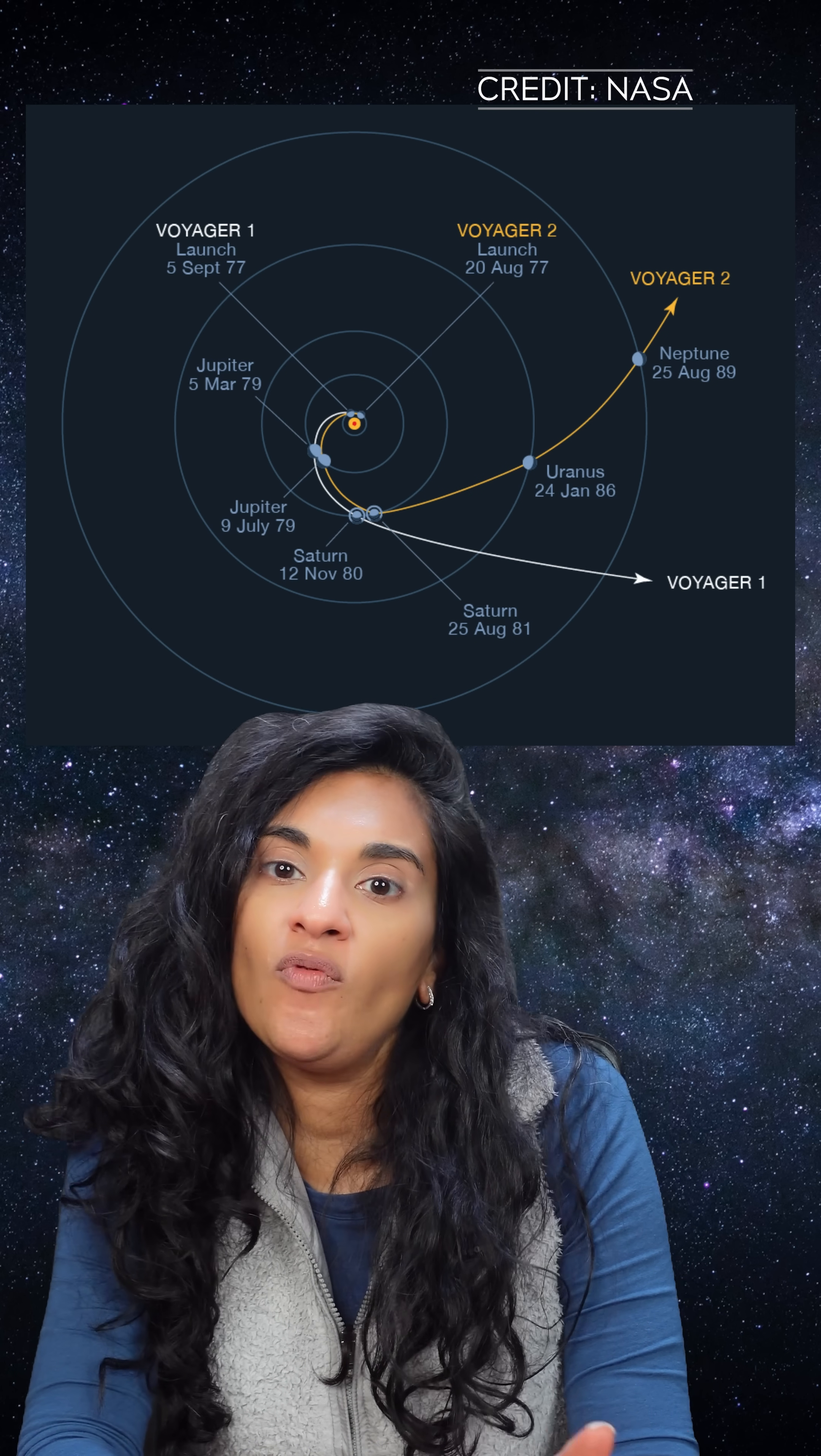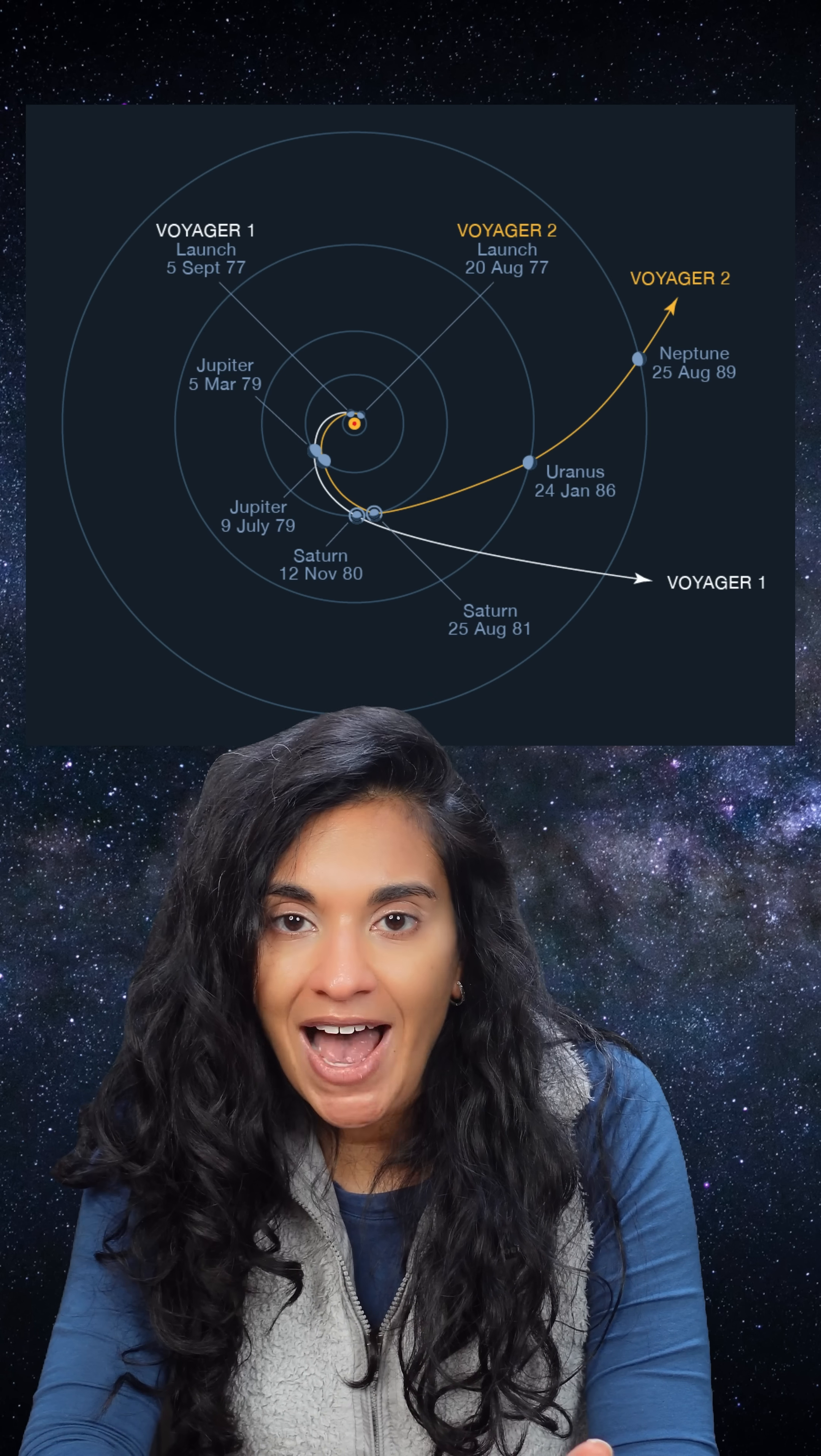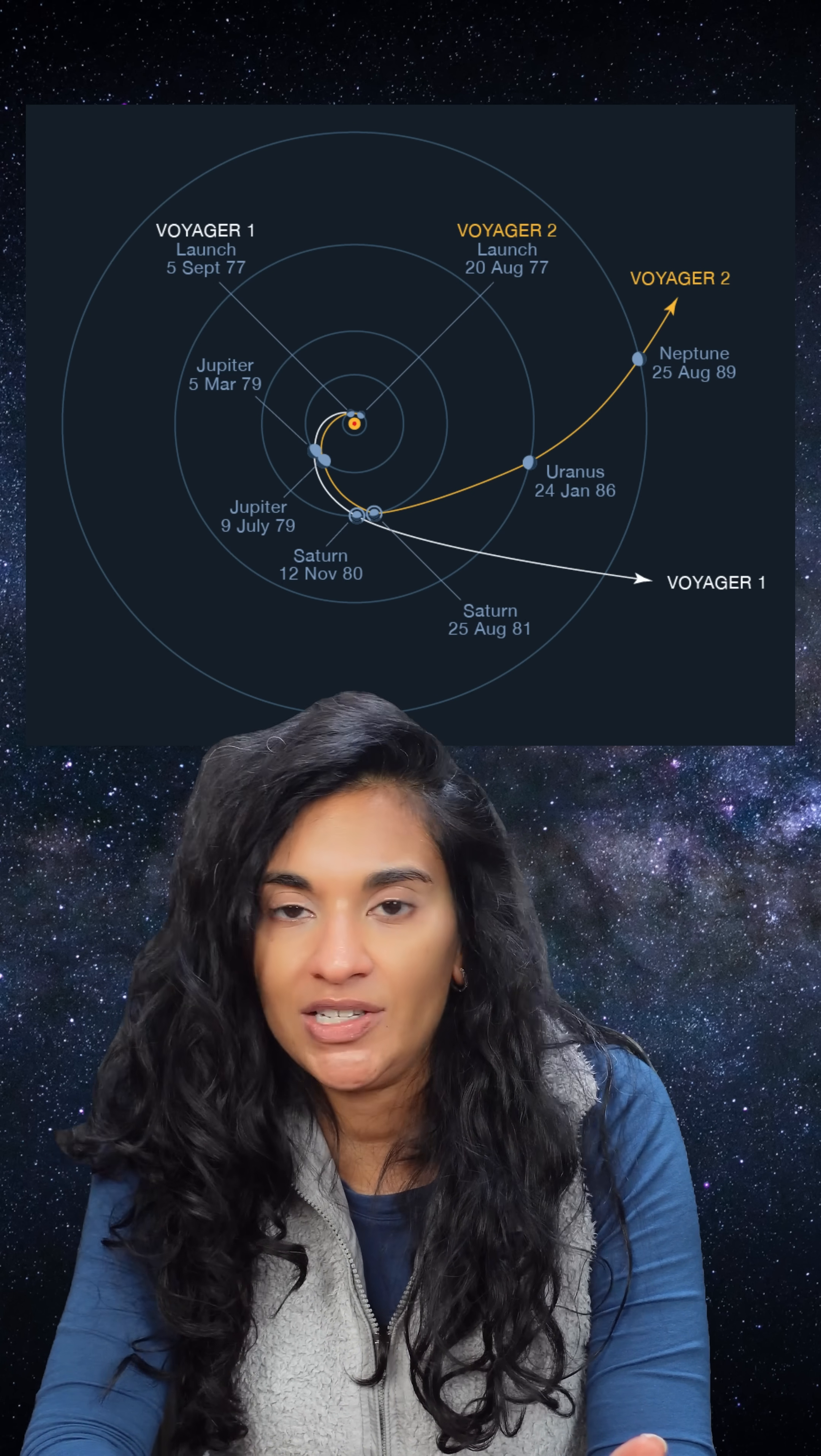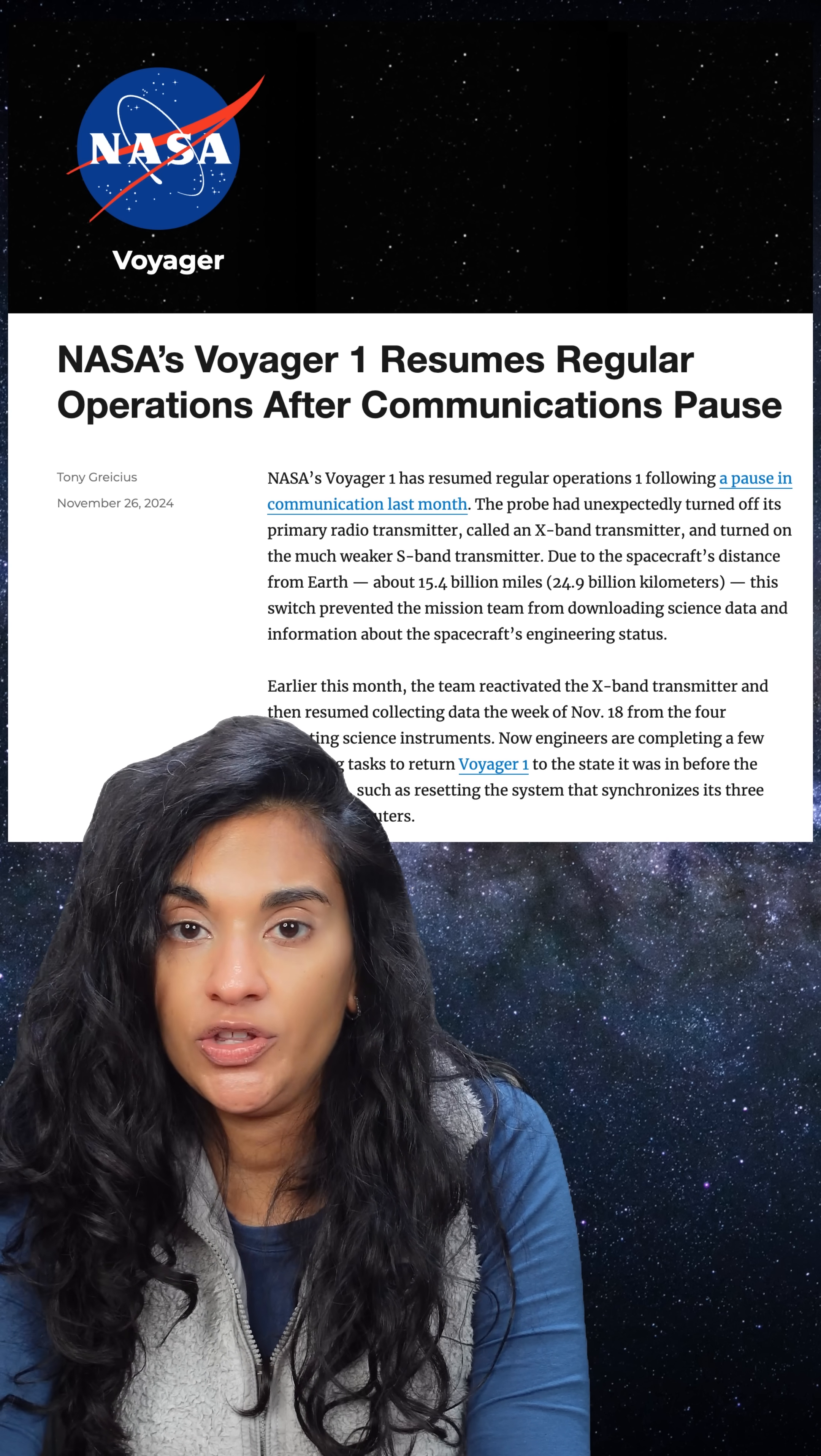The team does use a virtual computer model to simulate what Voyager 1's power situation is at any given time, but it's not exact. There's no way to model the environment and the harsh radiation that Voyager 1 has been subject to these last few decades. This is a good signal that our virtual models of Voyager 1 may have reached their limit.